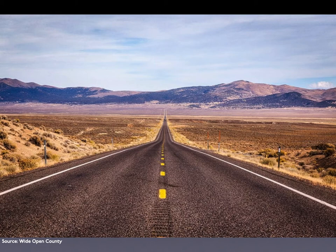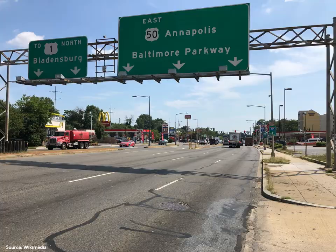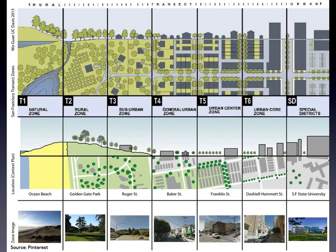Well beyond the city limits, where the context is rural T2 and suburban T3, U.S. 50 is a limited access highway. As U.S. 50 moves into the T4 general urban zone near Washington, D.C., it transitions into a typical arterial road. Once U.S. 50 moves into the city, it becomes New York Avenue — while still large, it has become a much more urban street with sidewalks, medians, on-street parking, and street trees.